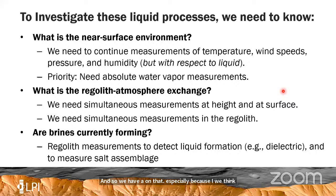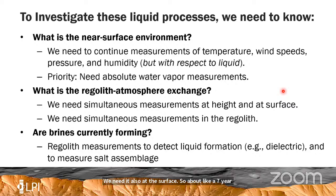We also need to understand how that water vapor is actually changing with the regolith and coming back out. So we need simultaneous measurements at height. In order for that to be comparable to other missions, it should be at about 1.5 meters. We need it also at the surface — about a centimeter or so away from the surface — and then in the regolith.